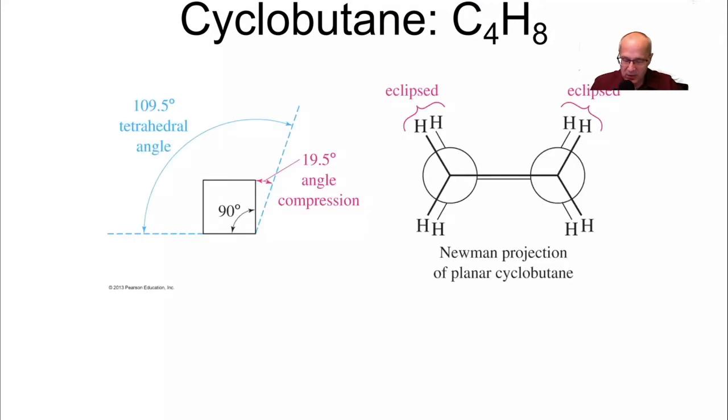Cyclobutane. Here's another example of angle strain. As you can see here, the ideal angle, 109.5 degrees, is being compressed slightly, 19.5 degree angle compression to 90 degrees. That's going to cause a little bit of the bond bending. Here is the torsional strain of cyclobutane. As you can see, these hydrogens are forced to be in the eclipsed environment. And there's no rotation here. So three and four-membered rings both have torsional strain, they both have angle strain, and they're both very reactive.